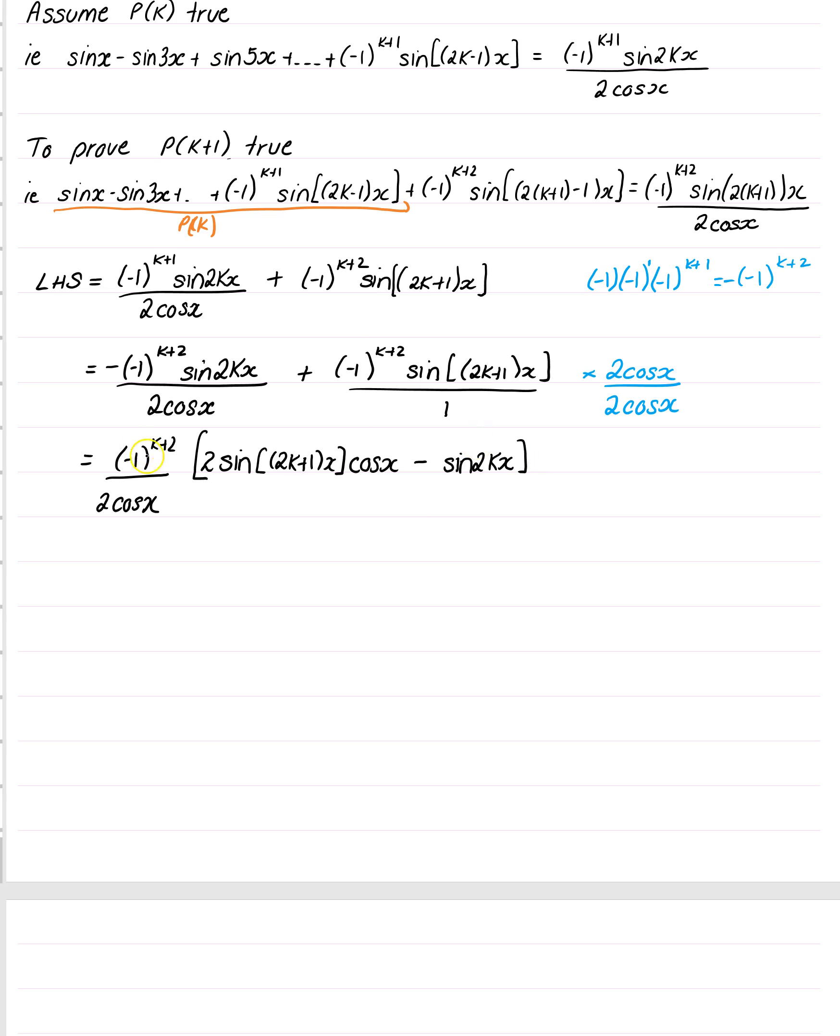So this is starting to take shape because I've got my minus 1 to the k plus 2, which is what I wanted. I've got my 2 cos x over here. And somehow I have to turn all of this into this bit here. This is where I'd like you to pull out the trig identities and have a look at all of those formulas. And one of them should leap out to you, which involves 2 sin alpha cos beta.